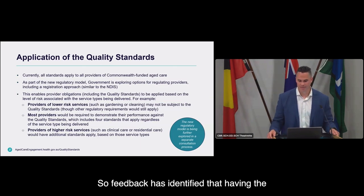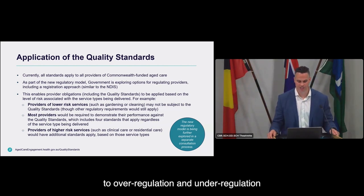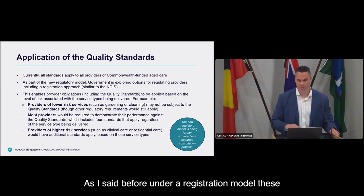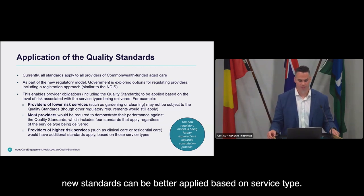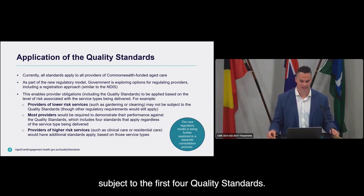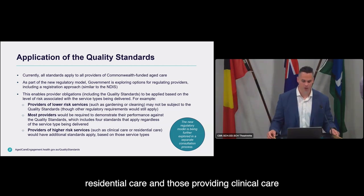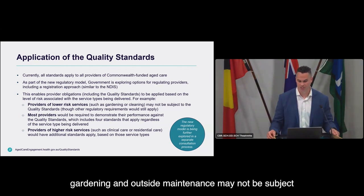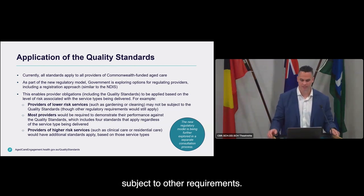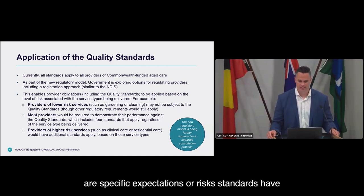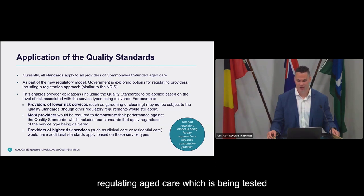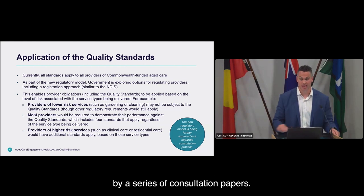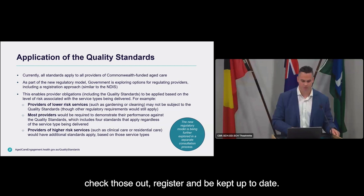Feedback has identified that having the same standards applied to all providers can lead to over-regulation and under-regulation of some providers. Under a registration model, these new standards can be better applied based on service type. Most providers will be subject to the first four quality standards. Some providers of higher risk services, such as residential care and those providing clinical care, will be subject to some or all of the other three quality standards as relevant. Providers delivering lower risk services, such as gardening and outside maintenance, may not be subject to the quality standards but will continue to be subject to other requirements. This approach is further explored in a separate consultation on the new model for regulating aged care — I encourage you to go to the Engagement Hub to register and be kept up to date.